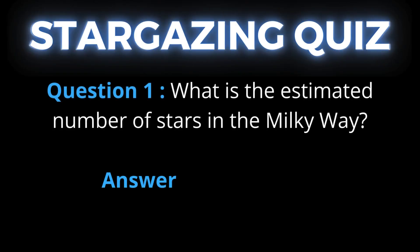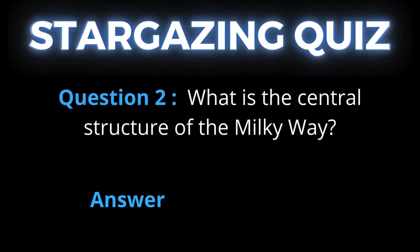Question 1: What is the estimated number of stars in the Milky Way? And the answer is B, 100 billion. Question 2: What is the central structure of the Milky Way? And the answer is B, barred spiral.